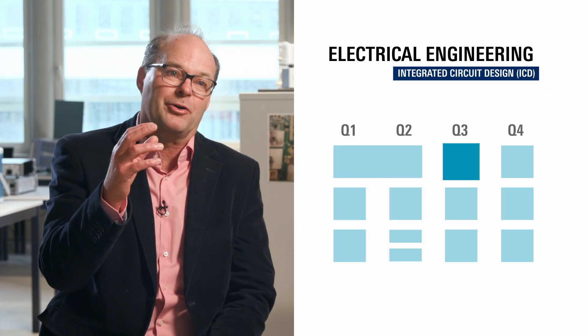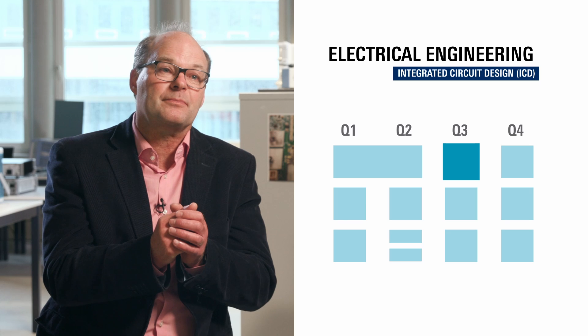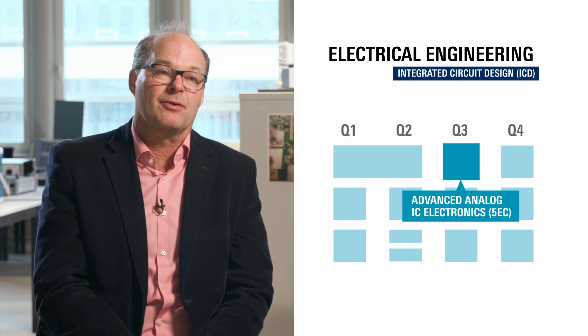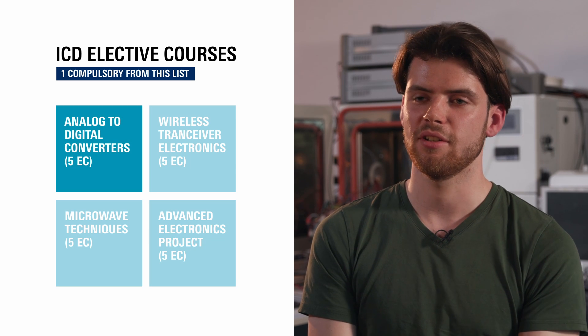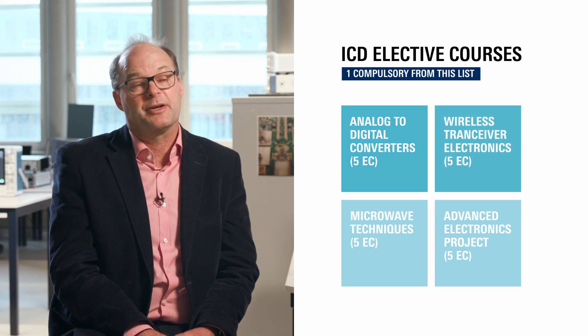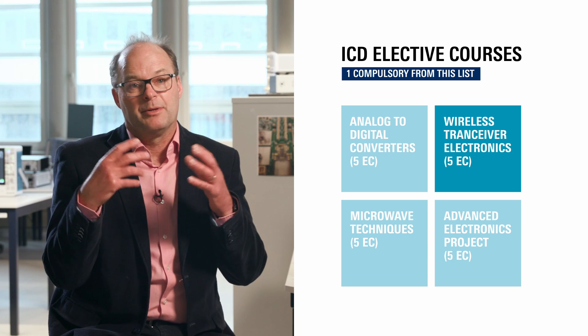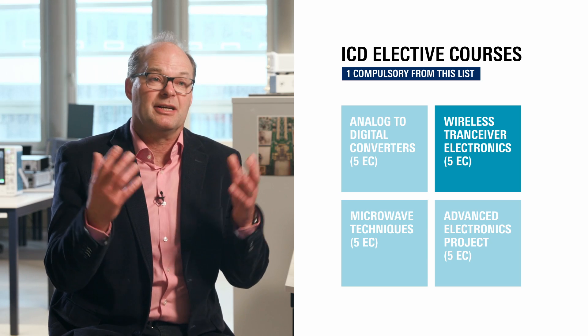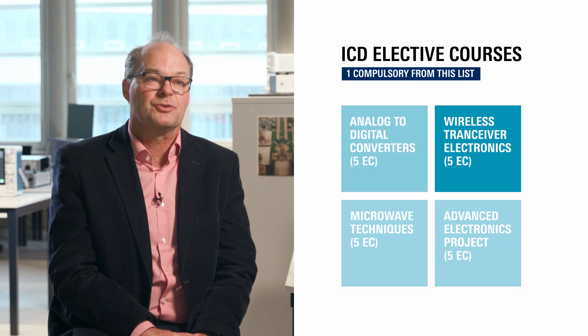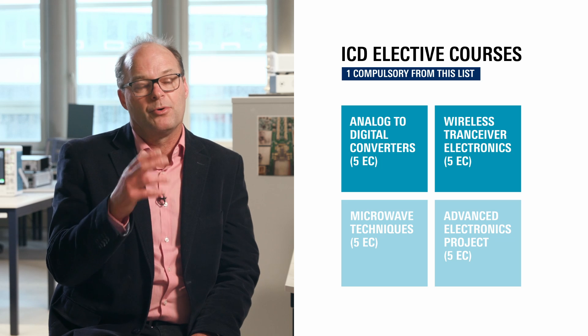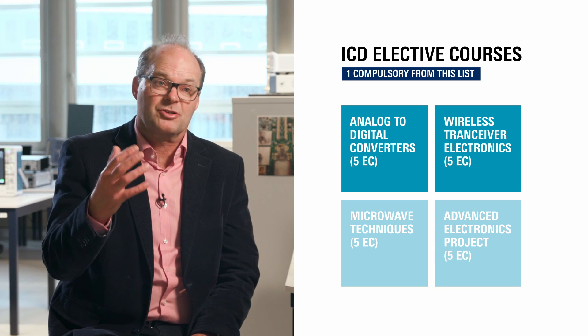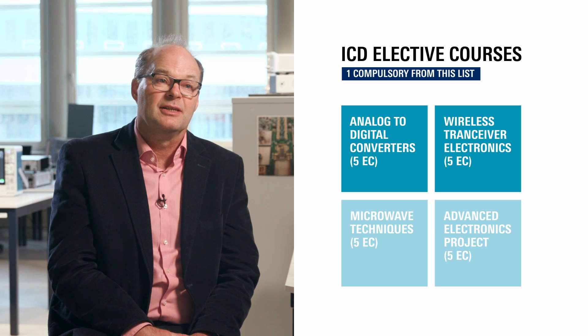So we teach the basics and build up small circuits from a transistor. That's the course called Advanced Analog IC Electronics. Then you can choose a course on analog to digital converters, which is the specialization I took. Or integrated transceiver electronics, which covers everything between the bits and the antenna — basically all the interfacing parts. Those two courses — wireless transceiver electronics and analog to digital converters — are more on a higher level, with more complex blocks than just playing with a few transistors. You can also choose a lot of electives outside ICD if you want to be educated a little bit broader.